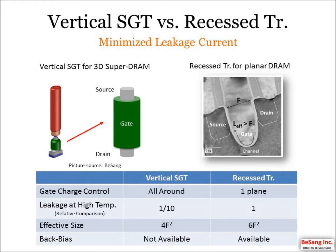Let me compare the characteristics of vertical SGT and recessed transistor. Both are good for scaling the distance between source and drain in order to minimize leakage current. Vertical SGT controls the gate at all directions, so it has better sub-threshold characteristics compared to the recessed transistor. At high temperature, it is well known that SOI has about 10 times less junction leakage current. One downside of vertical SGT is that no back bias is available. Overall, both work well for minimizing leakage current.